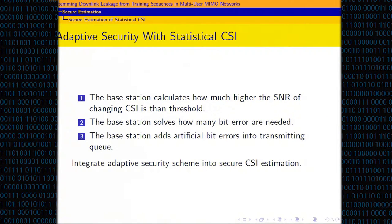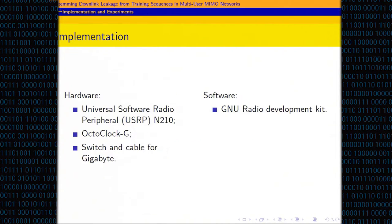The base station calculates how much higher the SNR of the changing CSI is than the chosen threshold, then determines how many bit errors to insert into the download. The base station adds artificial bit errors into its transmitting code accordingly. This adaptive security scheme is integrated into our secure CSI estimation easily, since secure CSI estimation happens before encoding and the adaptive security scheme operates during the coding process. We implemented our secure CSI estimation and adaptive security scheme for multi-user MIMO networks in a time division duplex system using USRP N200 series hardware and an OCTO clock for PPS, with a gigabit switch, and GNU Radio as the main software development kit.